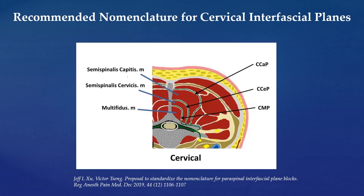Nomenclature is critically essential for teaching, research, and clinical practice of regional anesthesia. For that purpose, we would call the fascial plane lateral to the multifidus muscle the Cervical Multifidus Plane (CMP). The fascial plane lateral to the cervical semispinal muscle is the Cervical Semispinal Plane (CCEP). And the fascial plane lateral to the capitis muscle is the Cervical Capitis Plane (CCP).